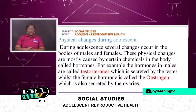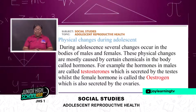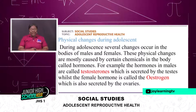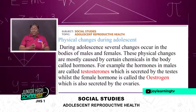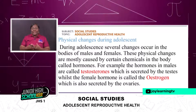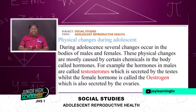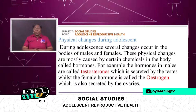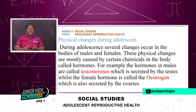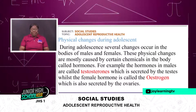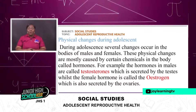Now let's look at the physical changes during adolescence. Several changes occur in the body of males and females. These physical changes are mostly caused by certain chemicals in the body called hormones. The hormone in males is called testosterone, which is secreted by the testes, whilst the female hormone is called estrogen, which is also secreted by the ovaries.